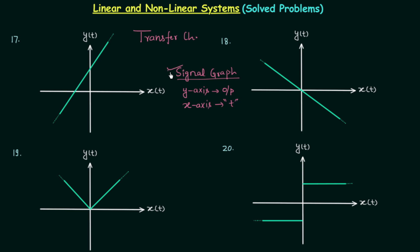We know about the signal graph, but what about transfer characteristics? All four plots here are transfer characteristics of four different systems. Transfer characteristics is the plot between the output and the input — y(t) is the output, and x(t) is the input.